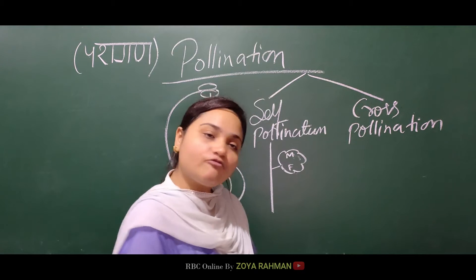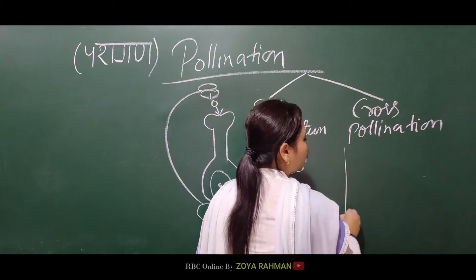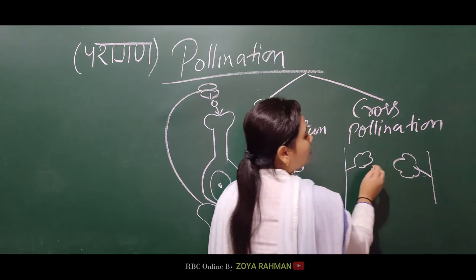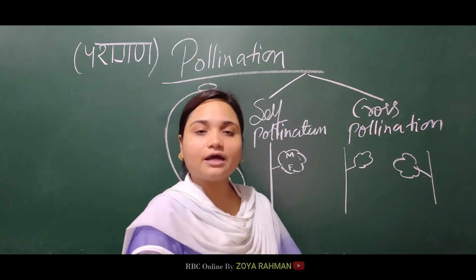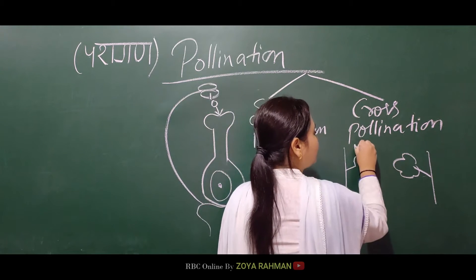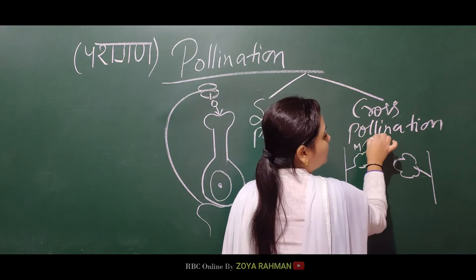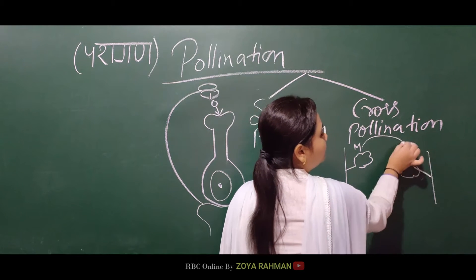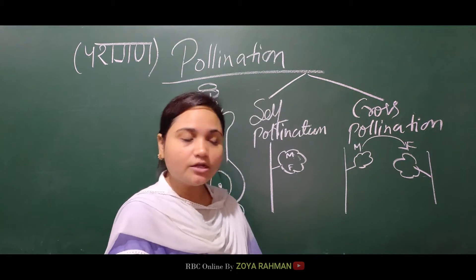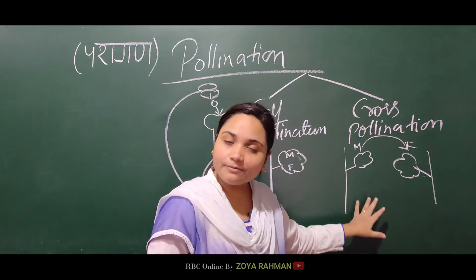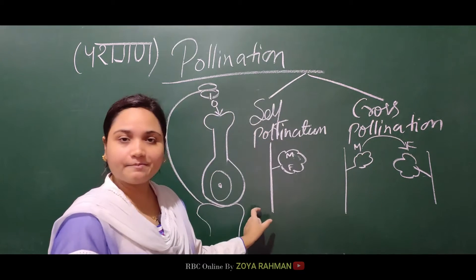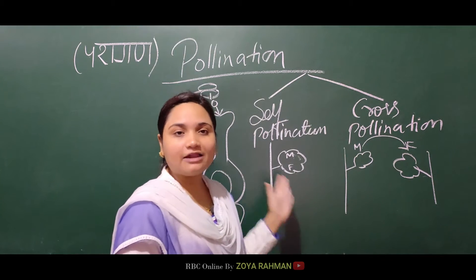If there is one flower on one plant, we call it self-pollination. But if there are two different plants with two different flowers, the male pollen grain will reach the female flower of the other plant. When pollination happens between two different plants, we call it cross-pollination. When it is on the same plant, we call it self-pollination.